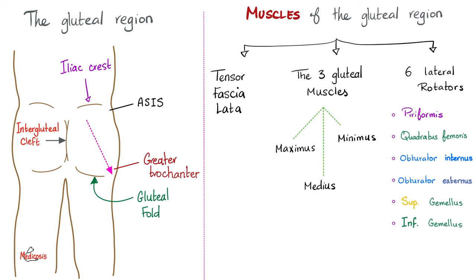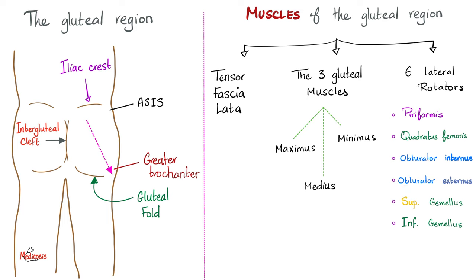Muscles of the gluteal region can be subdivided into three groups: the tensor fasciae latae alone; the three gluteal muscles — gluteus maximus, gluteus medius, gluteus minimus; and six lateral or external rotators of the hip joint — piriformis, quadratus femoris, obturator internus, obturator externus, superior gemellus, inferior gemellus. A useful mnemonic: piriformis, gemelli (superior and inferior), obturators (internal and external), quadratus femoris.